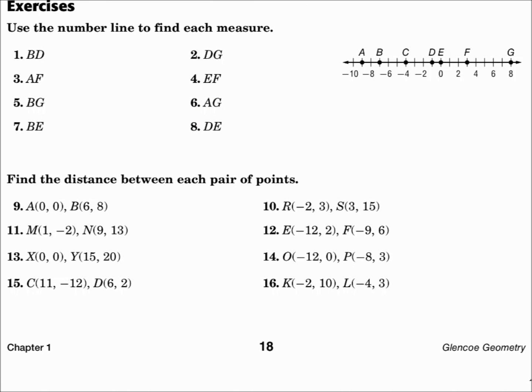Use the number line to find each measure. Segment BD. Well, B is between negative 8 and negative 6, so it's at negative 7. D is at negative 1, so we will subtract and take the absolute value. Negative 7 minus negative 1 is negative 6, and the absolute value of negative 6 is 6.